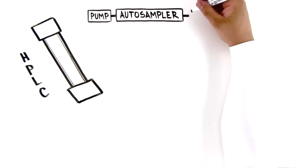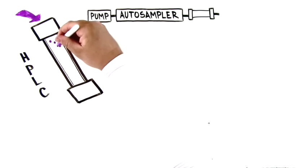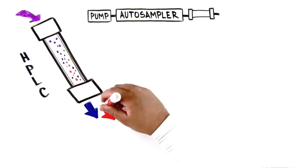After the pump, the eluent passes first the autosampler where the samples are injected on the column. The sample is then separated in the column. Finally,